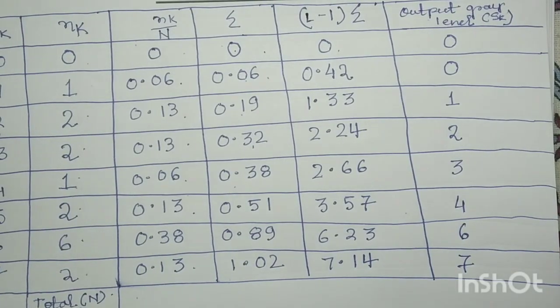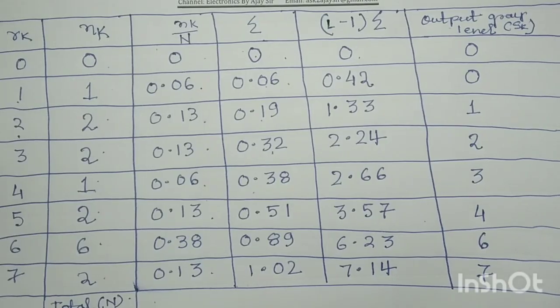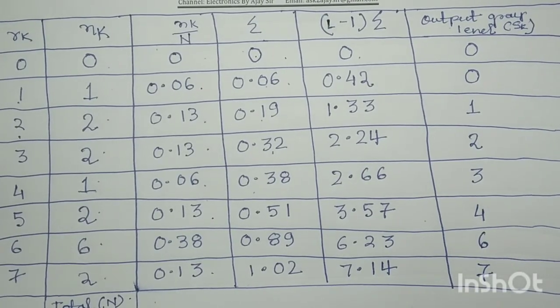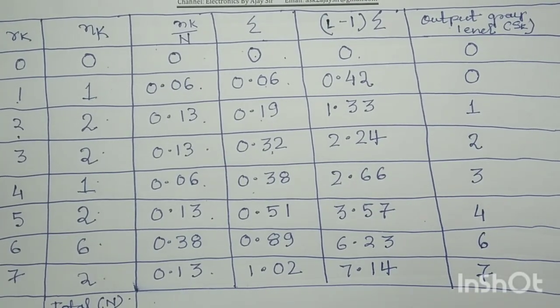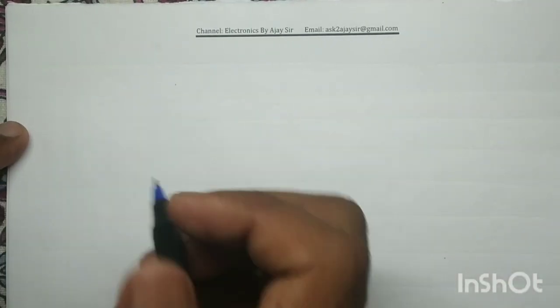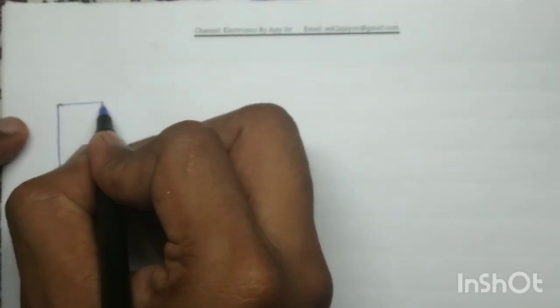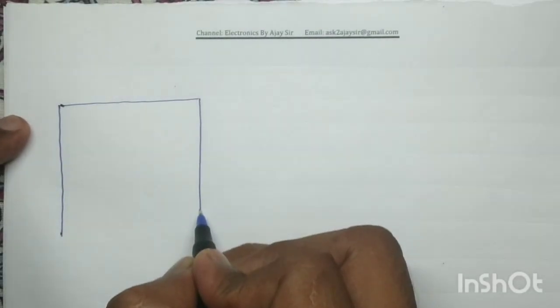After performing the histogram equalization, next we have to write the output image. For writing the output image, first we will draw our original input image.